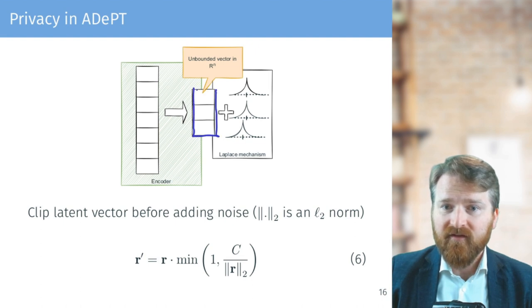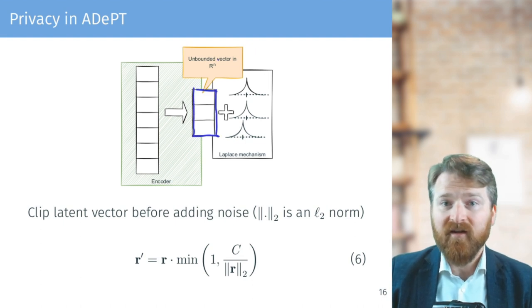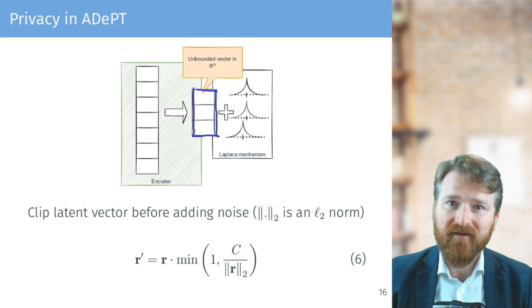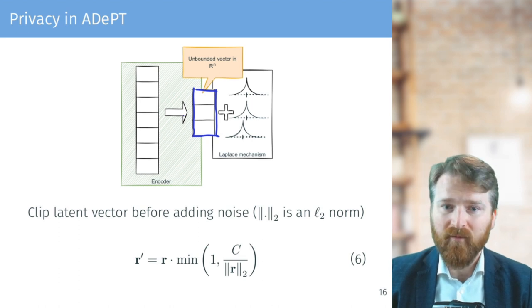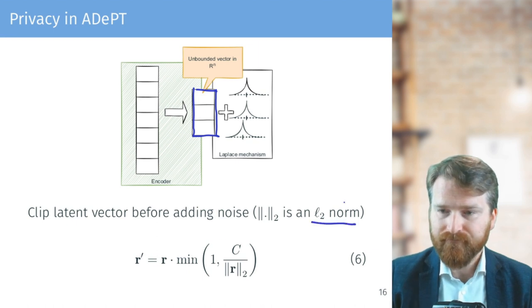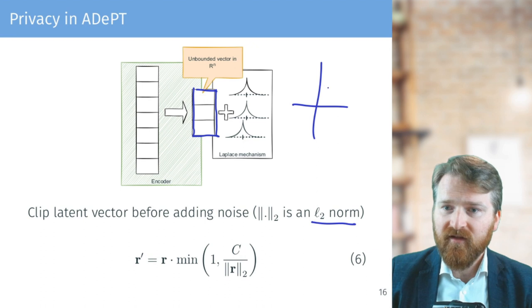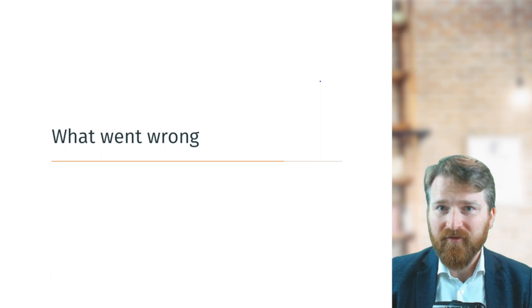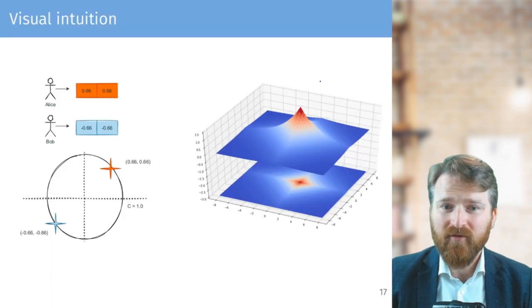So let's have a look at this latent representation. In standard encoder-decoder architecture, this is unbounded—this could be anything between minus infinity to infinity—which would mean there's an infinite sensitivity of this function, and it won't work. So AdePT is doing a standard thing, which is clipping—clipping the vector—so it's something standard for deep learning, and they're clipping by L2 norm. What does it mean? So if we are in two dimensions and this would be the constant C, the clipping—all points outside here would be basically clipped here—so everything would be within the distance of C. So far, so good.